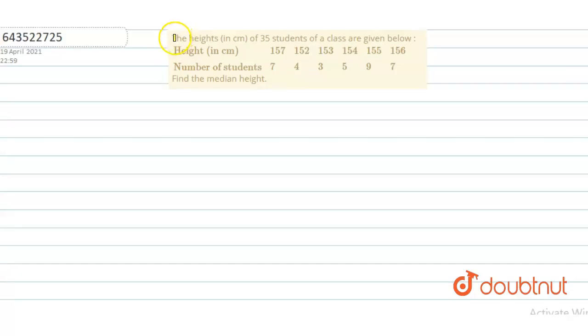Hello students, let us begin with the question. The question says the heights in centimeters of 35 students of a class are given. Let us write: height is given as 157, 152, 153, 154, 155 and 156.